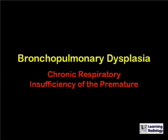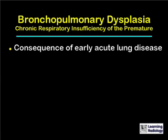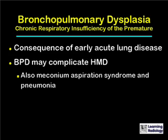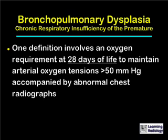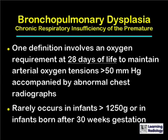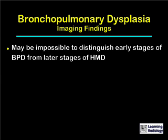Bronchopulmonary dysplasia, or chronic respiratory insufficiency of the premature, is a consequence of early acute lung disease. It can complicate hyaline membrane disease, but can also be seen with meconium aspiration syndrome and neonatal pneumonia. Common to most is the administration of oxygen under positive pressure. One definition involves an oxygen requirement at 28 days of life to maintain an arterial oxygen tension greater than 50 mmHg, accompanied by abnormal chest radiographs. BPD rarely occurs in infants under 1,250 grams or born after 30 weeks of gestation. Imaging findings may be impossible to distinguish from the later stages of hyaline membrane disease.